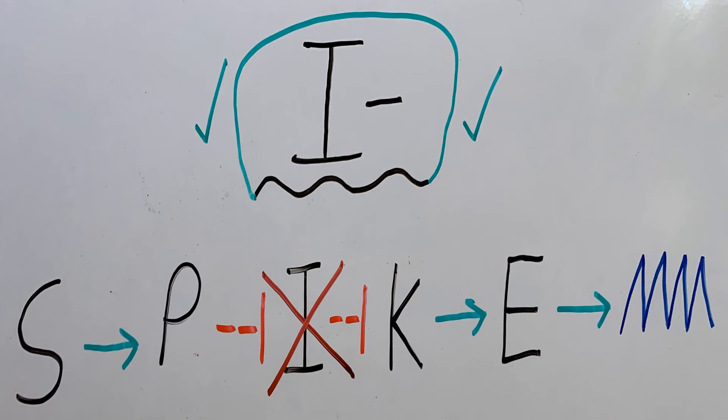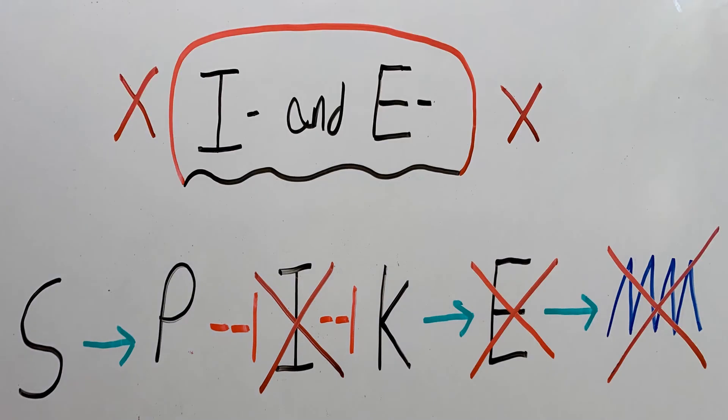Now we go into double mutations. This specific case deals with what will happen if I and E are mutated. So S promotes P, which goes on to inhibit I. However, I is mutated, so it can't go on to inhibit K. Like last time, K isn't inhibited, so it goes on to promote E.